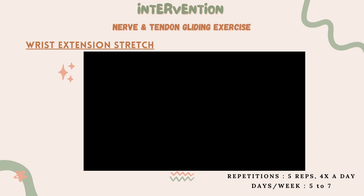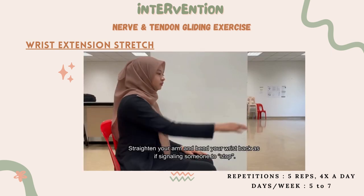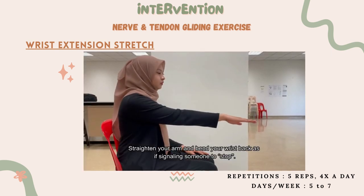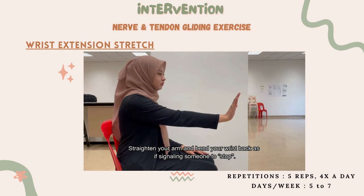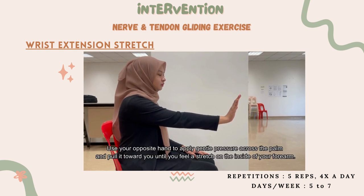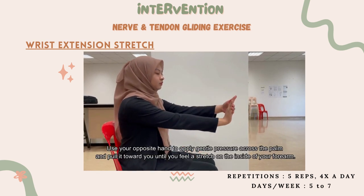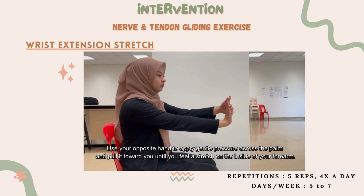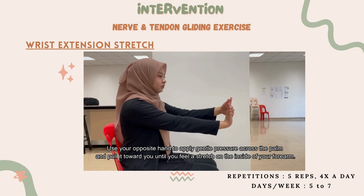The first step for this exercise is the wrist extension stretch. Straighten your arm and bend your wrist back as if signaling someone to stop. Use your opposite hand to apply gentle pressure across the palm and pull it towards you until you feel a stretch on the inside of your forearm.